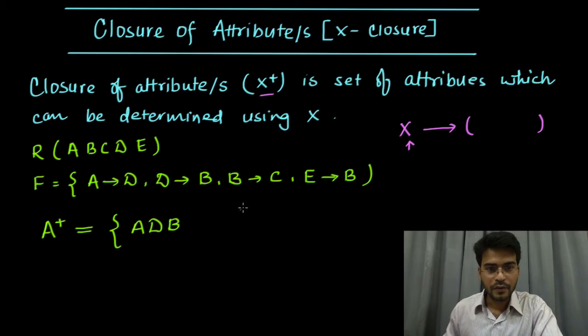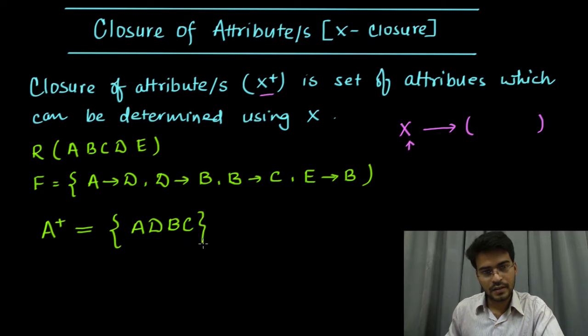Now from B we can determine C, and we already have B, so we can determine C. Now C and E determines B, so this cannot be used. Using these available attributes, we cannot determine any other attribute. So this is closure of attribute A.